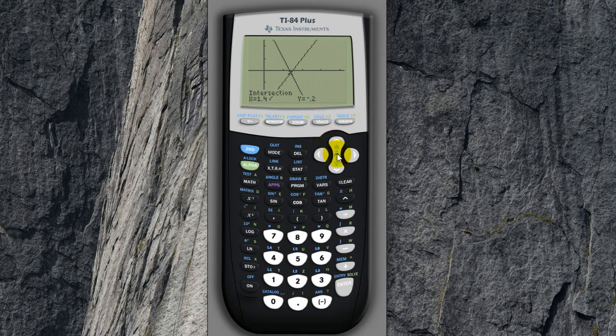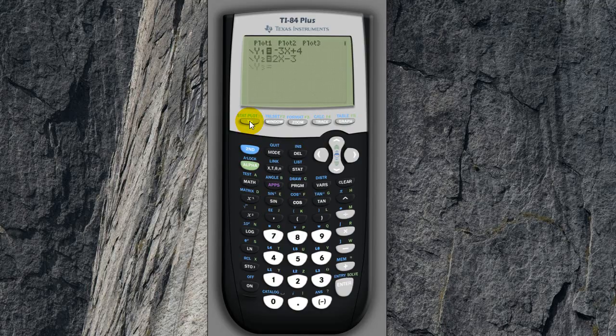Now you might ask, well, what's the point in guessing? Well, the guessing would work if we found the intersection between, let's say, a parabola and a straight line. So let's go back to Y equals.